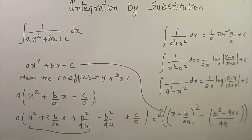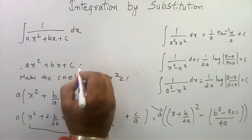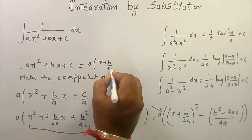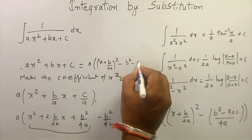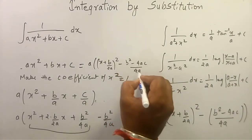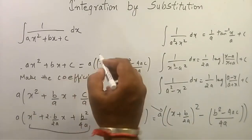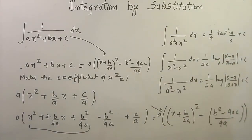Now half of our problem is solved. In place of ax² + bx + c we write a·(x + b/2a)² - (b² - 4ac)/4a. When you substitute this into the integral, you can use either of the three formulas for solving the expression. Now I am taking an example to better illustrate this.